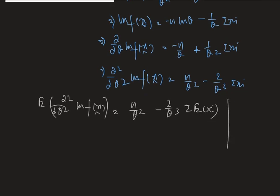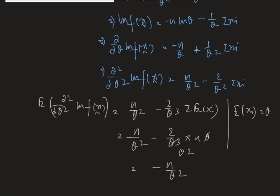Now for this distribution, expectation of xi equals theta as it is an exponential distribution with parameter 1 by theta, therefore the expected value of xi must be theta. So we get n by theta square minus 2 by theta cube multiplied by n theta, which results in minus 2 by theta square. Therefore the answer is minus n by theta square.